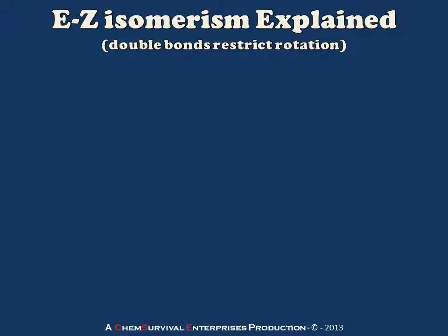Hey everybody, Dr. Davis here to talk to you a little bit about E-Z isomerism. We use this system of nomenclature when we're dealing with alkenes which have certain groups attached to them that create multiple potential geometric arrangements.